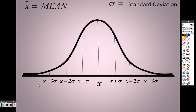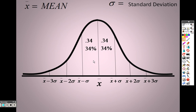Earlier I said that within one standard deviation from the mean you have a total of 68%. Well, in between this line and the mean is 34%, and on the other side is also 34%, totaling 68%.